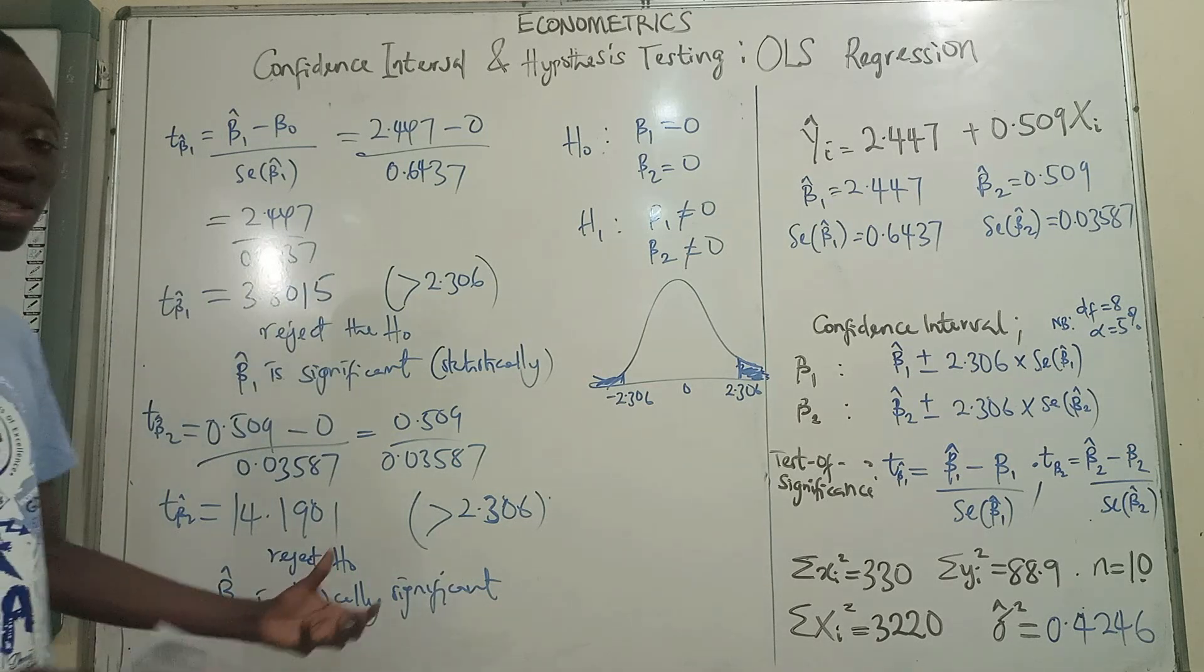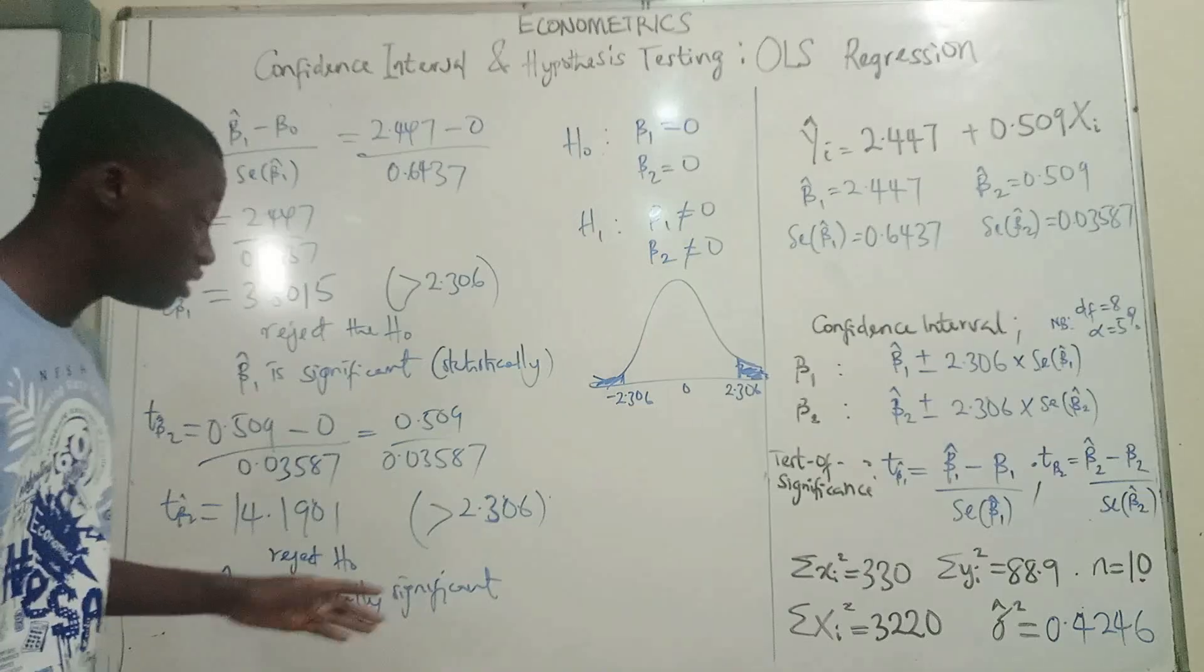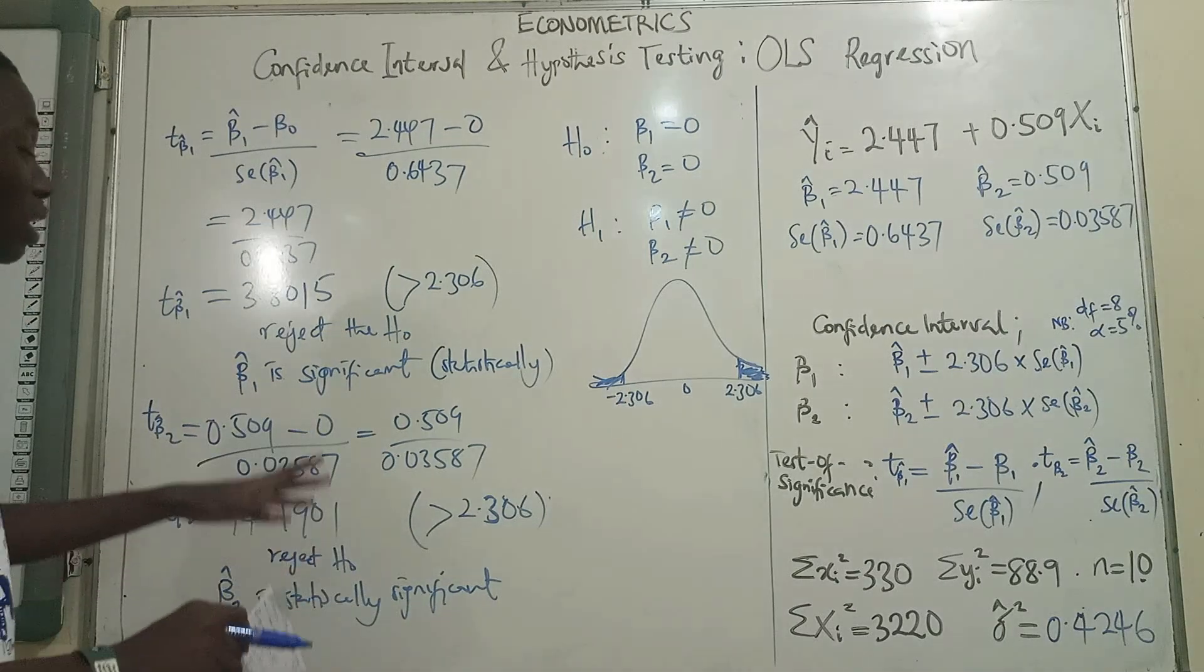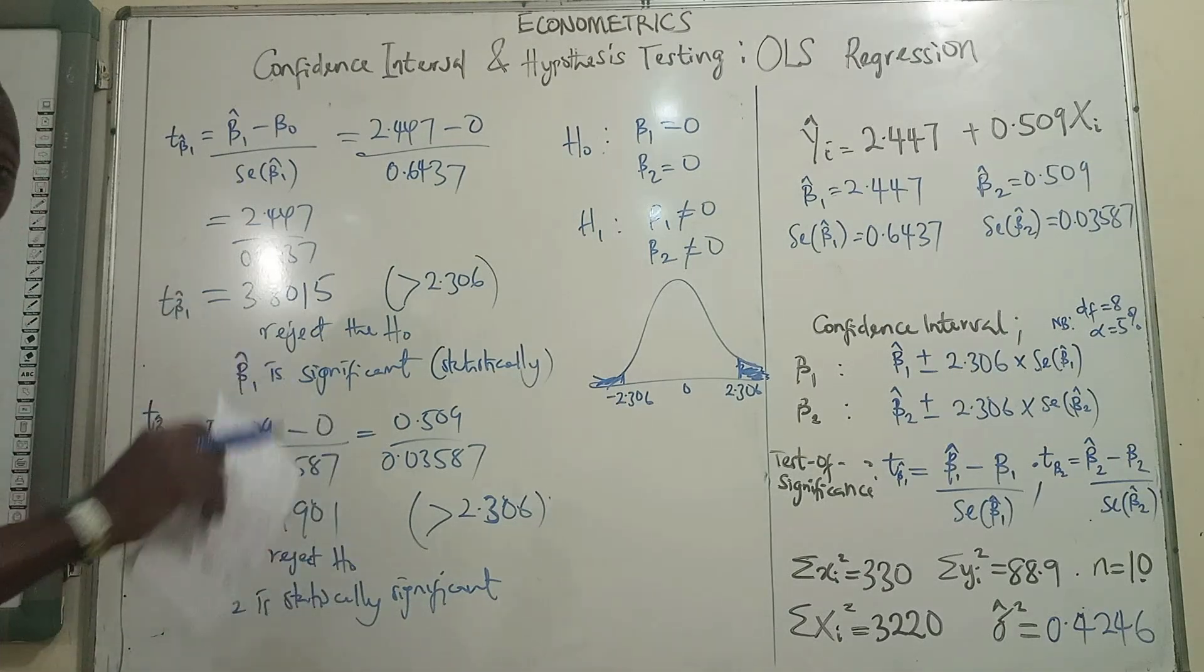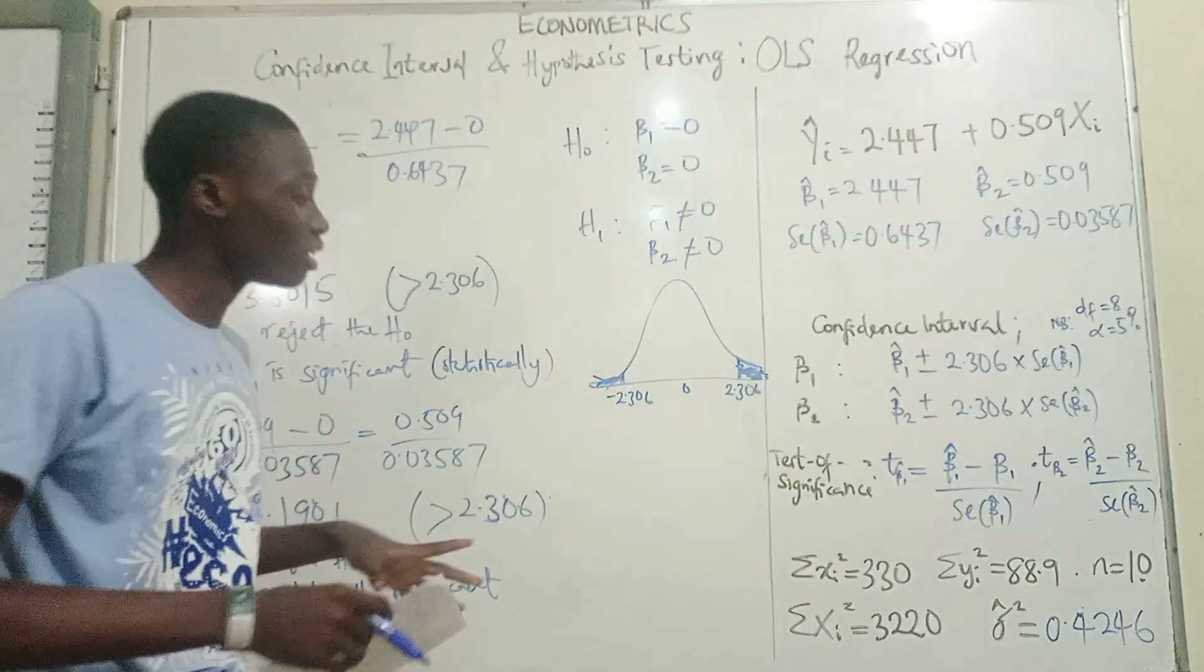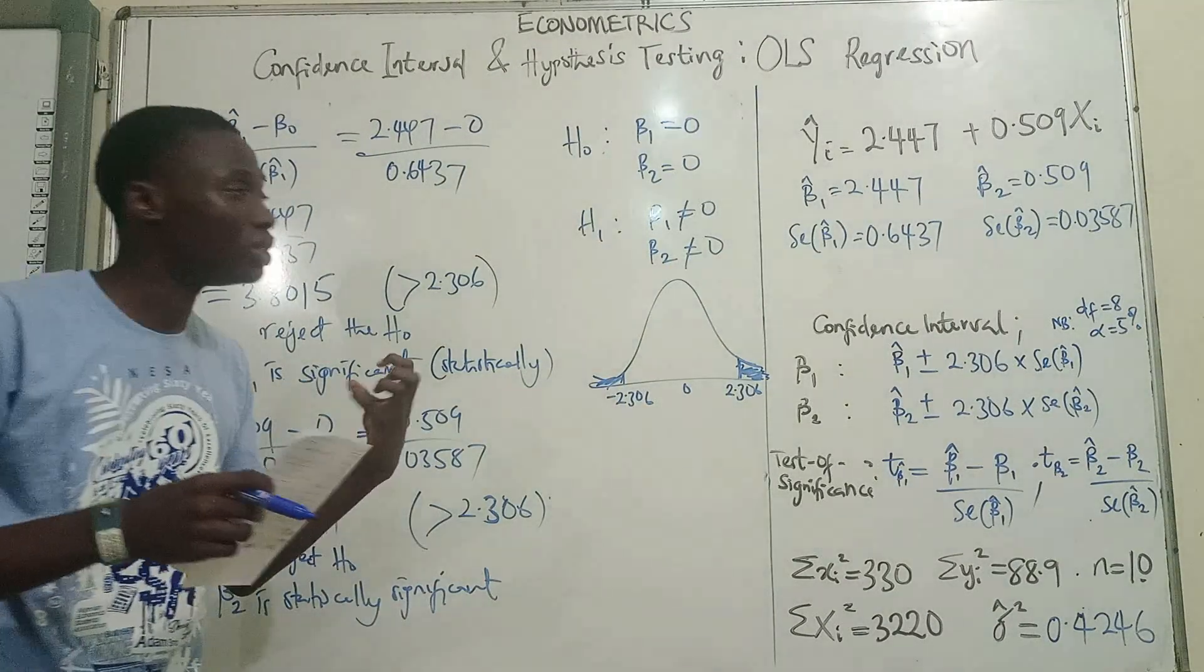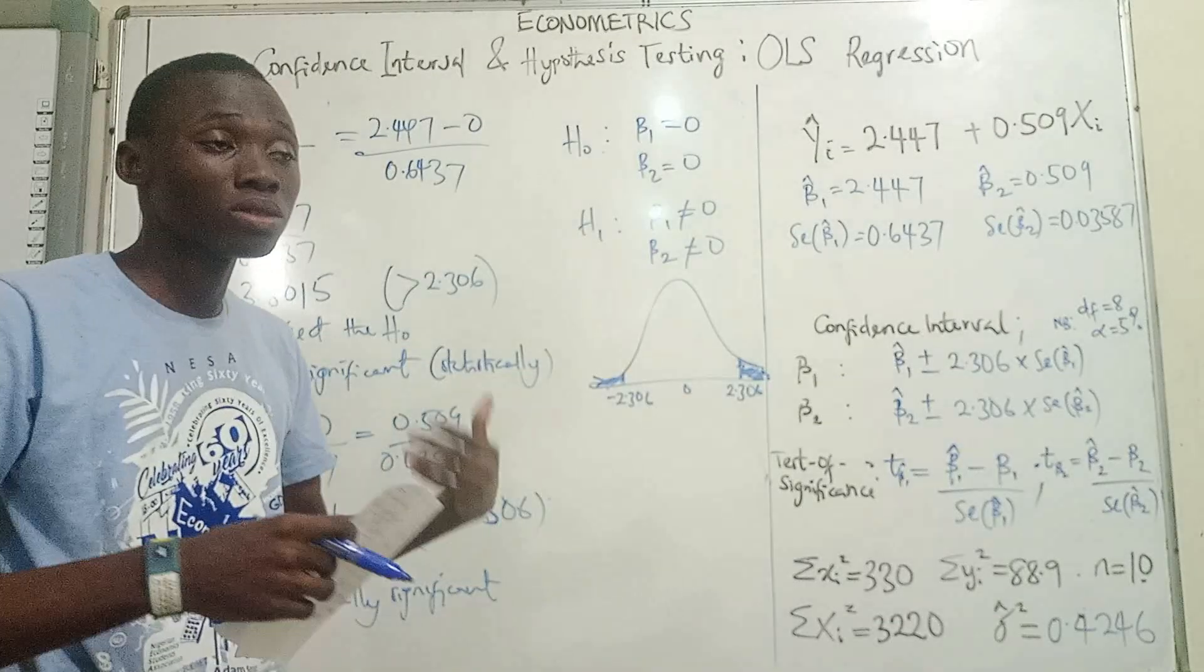And because it is greater than that, we reject the null hypothesis and we say that this is statistically significant. Our slope coefficient is statistically significant. It's statistically different from 0. It's not 0. And what that means is there is a relationship. The relationship between consumption and income actually exists.